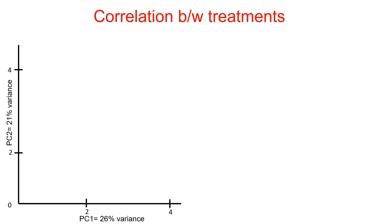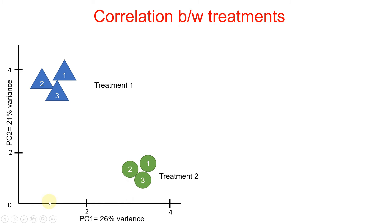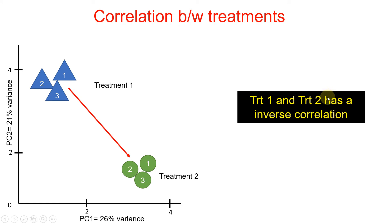Now let's try to understand another example. In this example, treatment one is placed with high Y value but low X value. Similarly, treatment two has high X value but low Y value. So if we plot the trend between these two, you can see the trend is decreasing — meaning treatment one and treatment two have an inverse correlation.